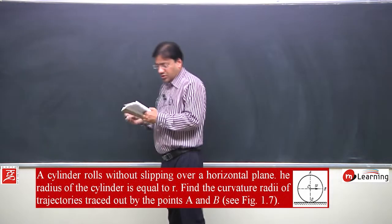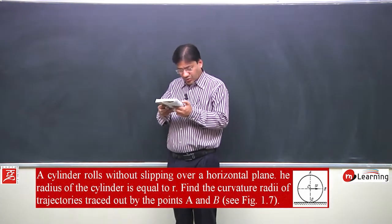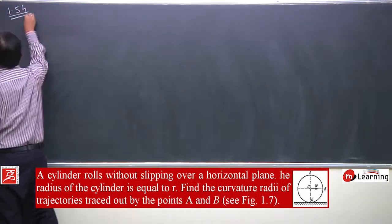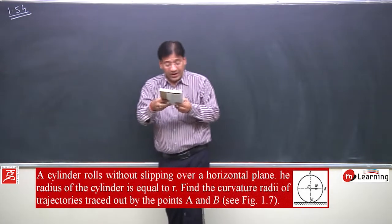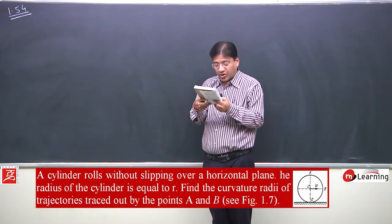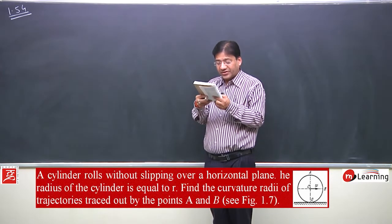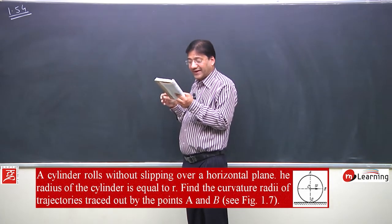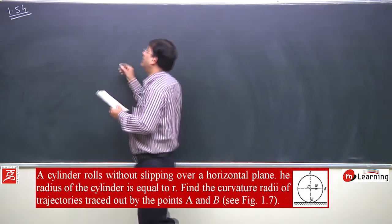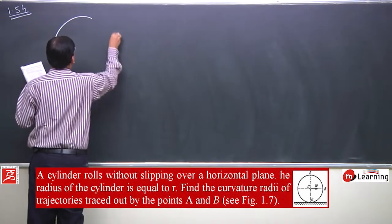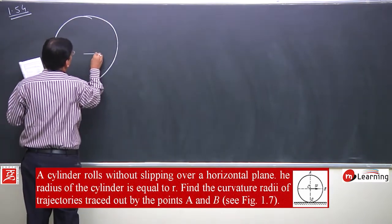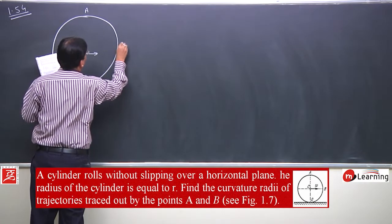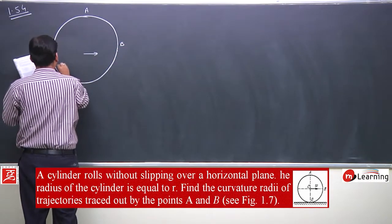I would solve problem number 1.54. A cylinder rolls without slipping over a horizontal plane. The radius of the cylinder is equal to r. Find the radii of trajectory traced out by points A and B. This is a cylinder rolling without slipping; these are points A and B, and the radius is r.